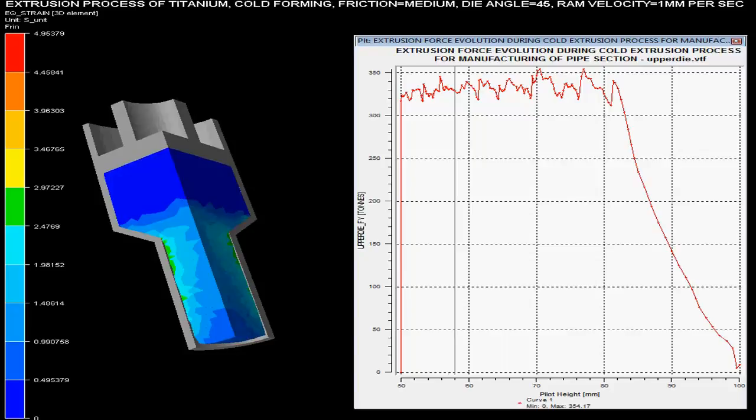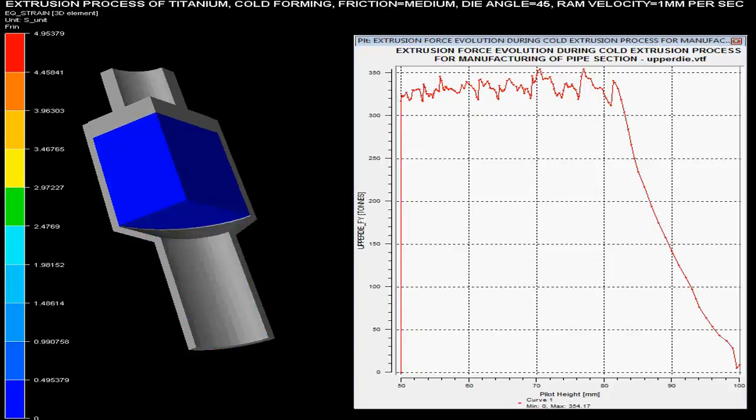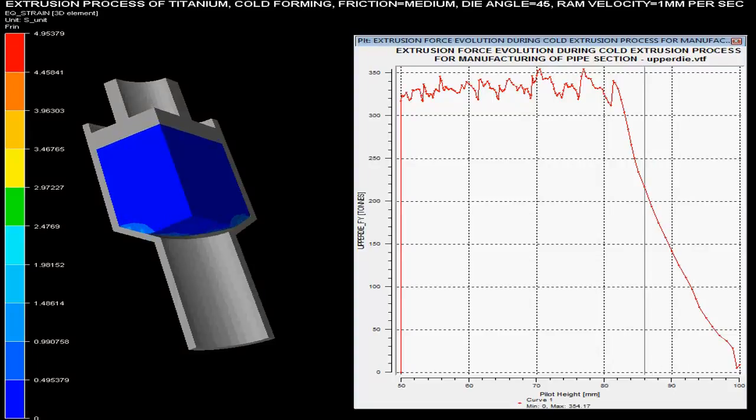Ram velocity is set as 1 mm per second. Die angle is specified as 45 degrees, and it is specified that there is medium friction during this cold extrusion process.